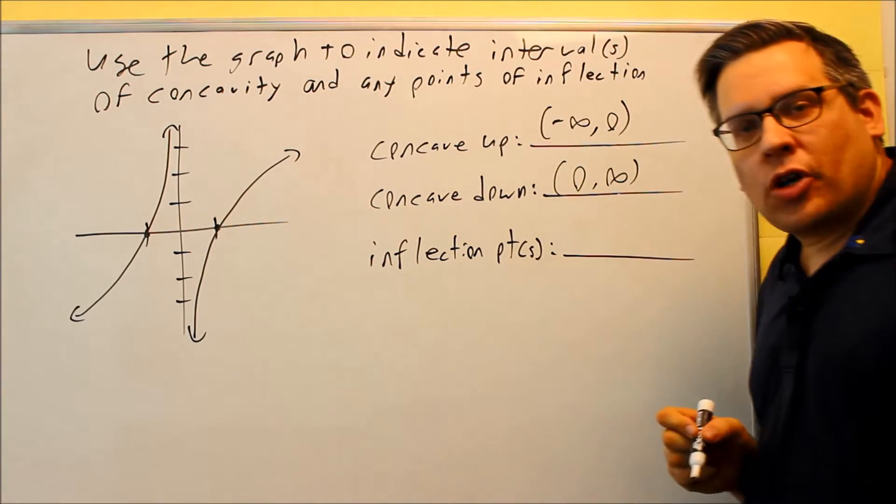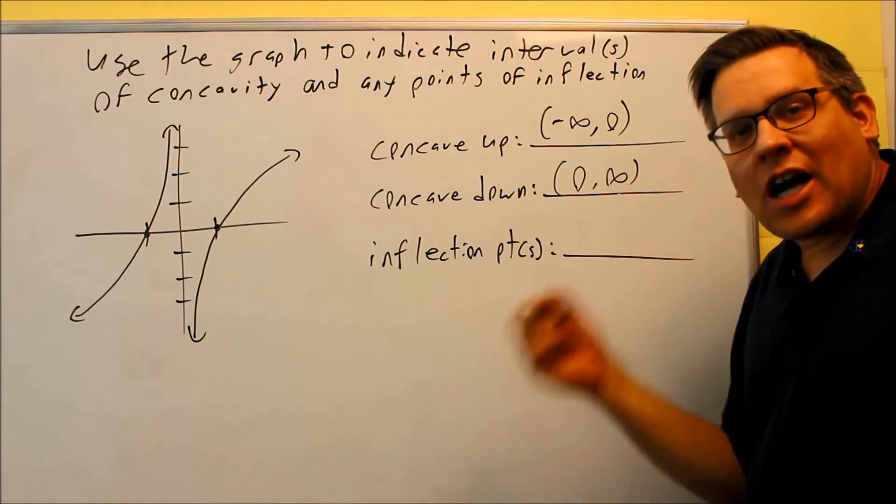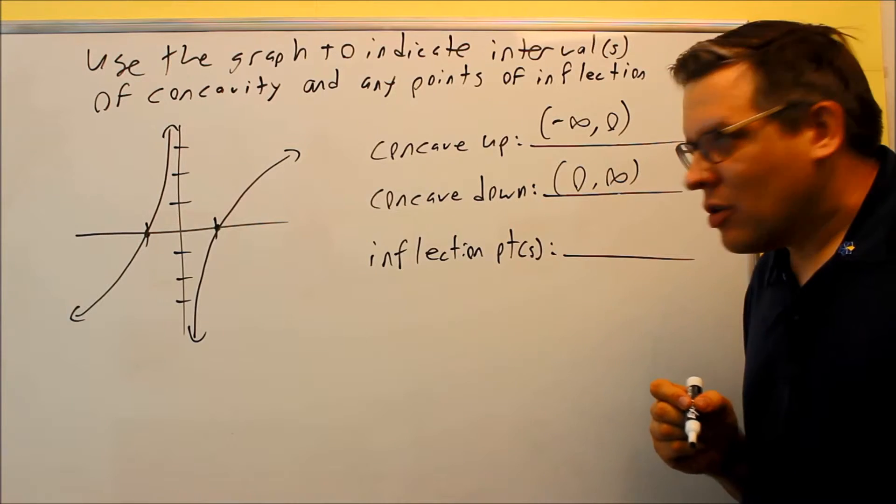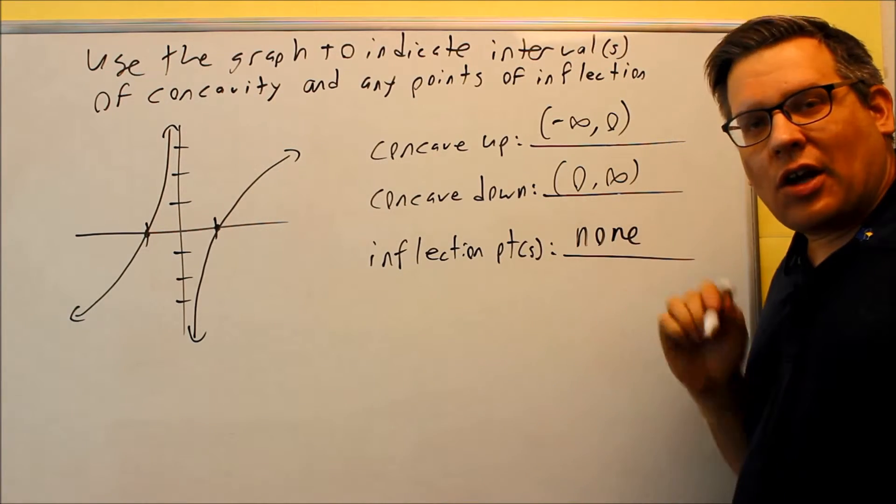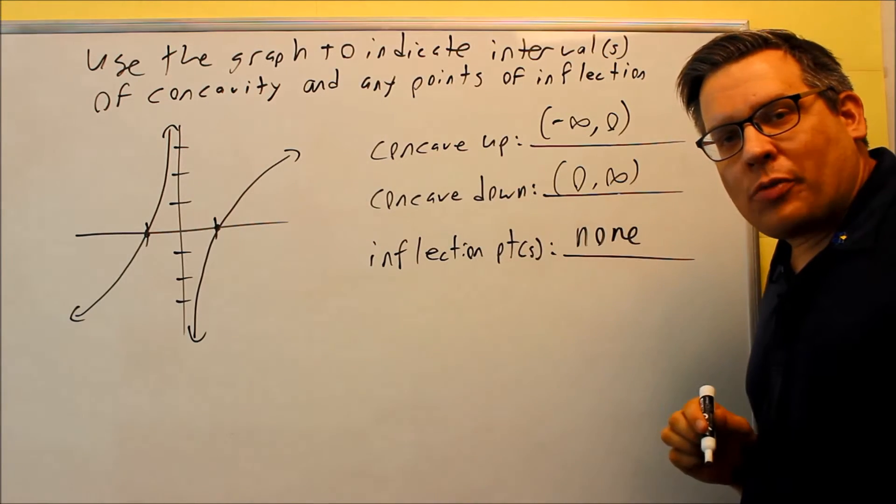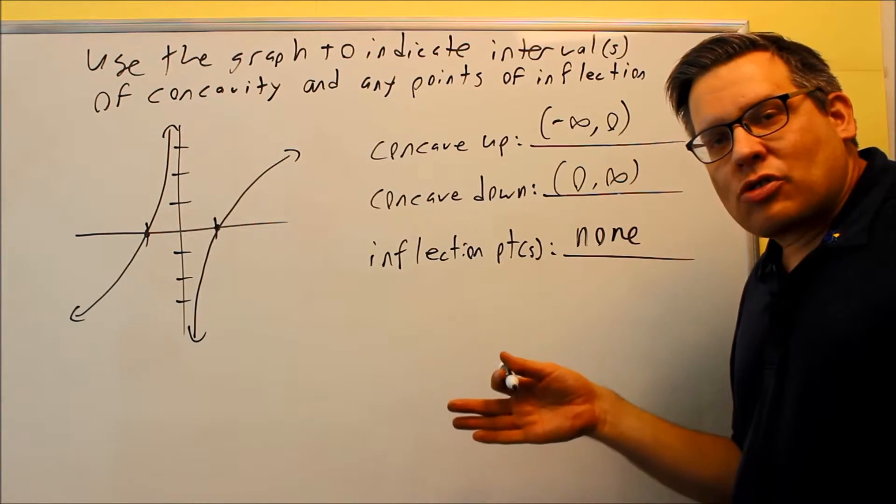And if you have a vertical asymptote here, that means that 0 is not defined on the original function. So in this case, for inflection points, you're going to say none.